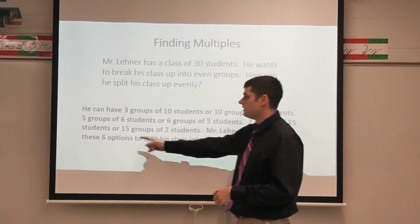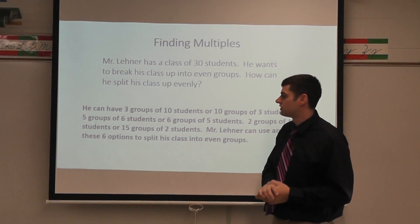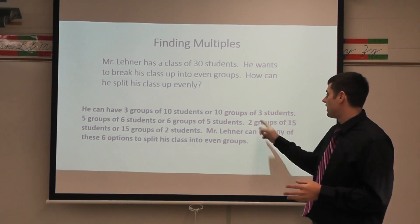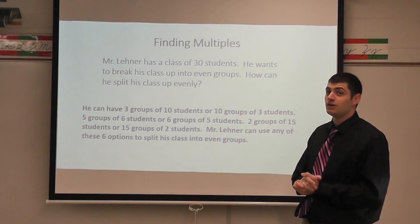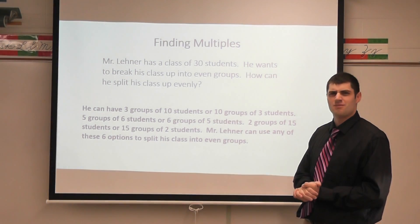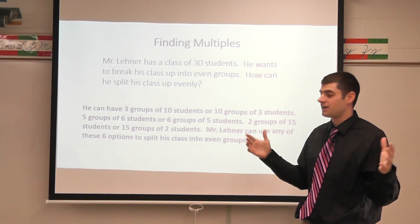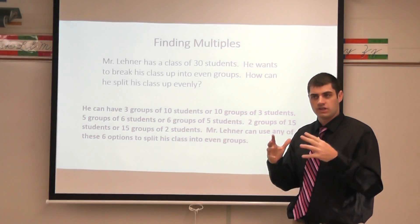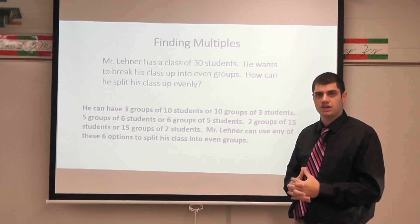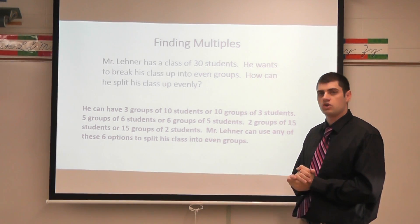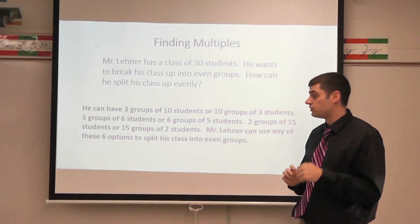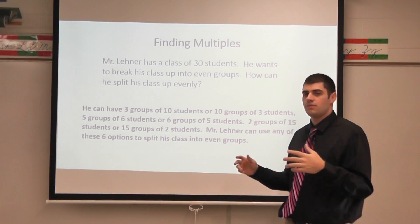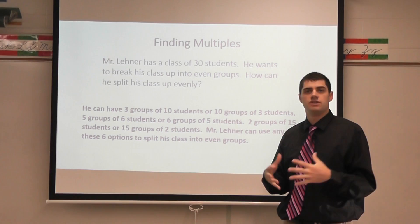I can also do five groups of six students or six groups of five students. I can do two groups of 15 — pretty big groups, that might be good for like a class debate, half and half. Or I can do 15 groups of two students, so if I want very small groups for a one-on-one discussion, I can do very small groups of just two students. So I can use any of these six options to split my class into even groups.